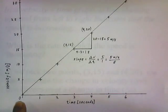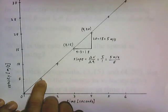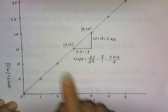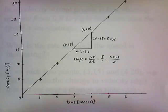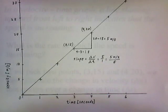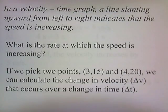At zero seconds, the car's at rest. At one second, it's moving at five meters per second. At two seconds, it's moving at 10 meters per second, and so on. It looks like the car is going faster as time passes, and notice that the line slants upward. We can make the following conclusion: in a velocity-time graph, a line slanting upward from left to right indicates that the speed is increasing.